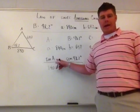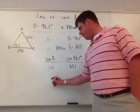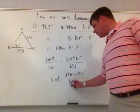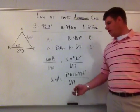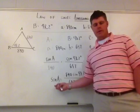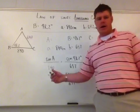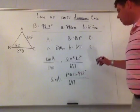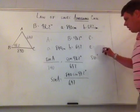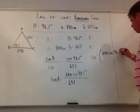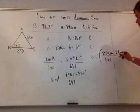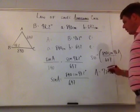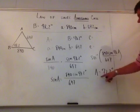Solving for sine of A: sine of A equals 890 times sine of 48.2 degrees divided by 697. To isolate A, take the arcsine — that's the sine inverse on your calculator, which is the inverse function, not one over sine. So angle A equals arcsine of (890 times sine of 48.2° divided by 697), which gives A equals 72.2 degrees.